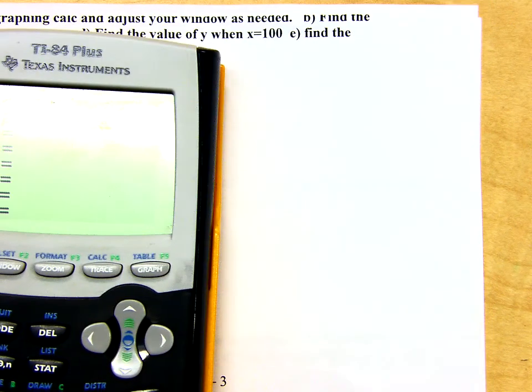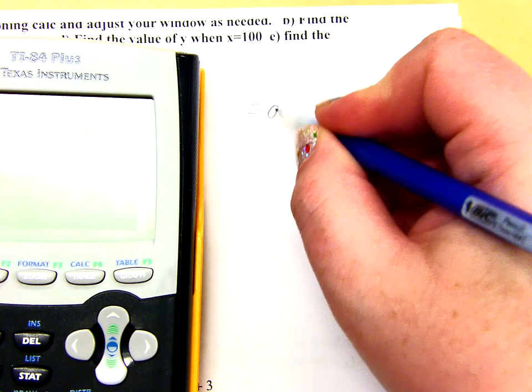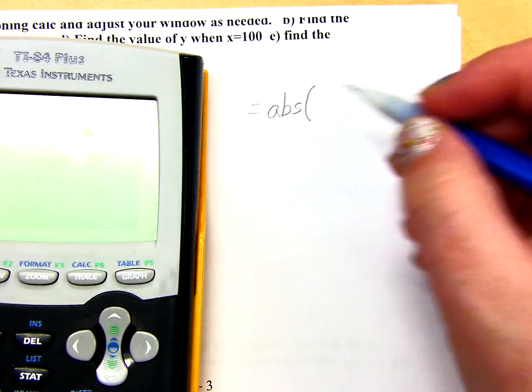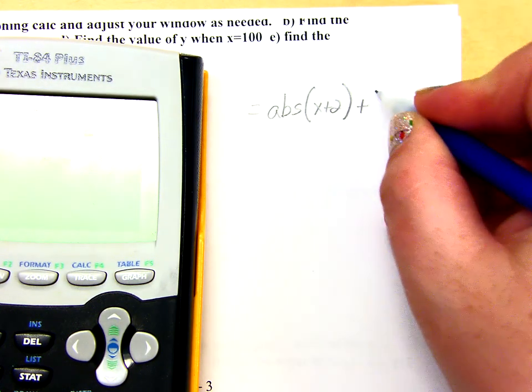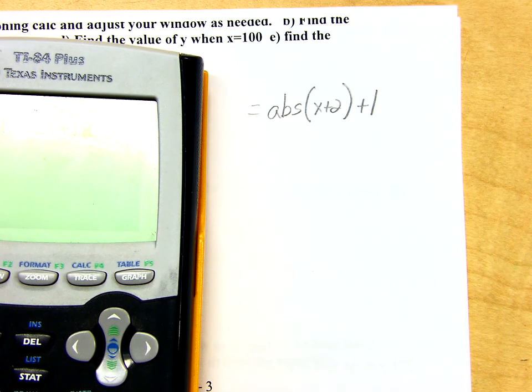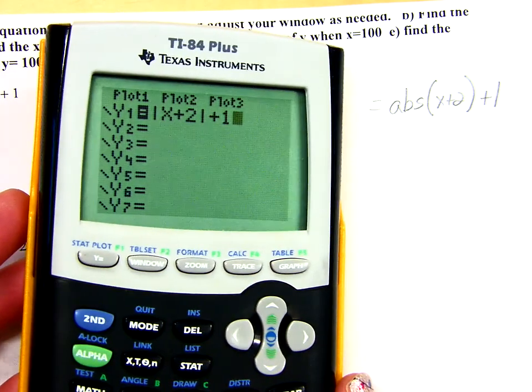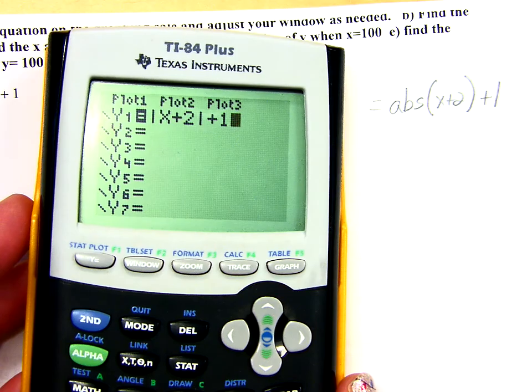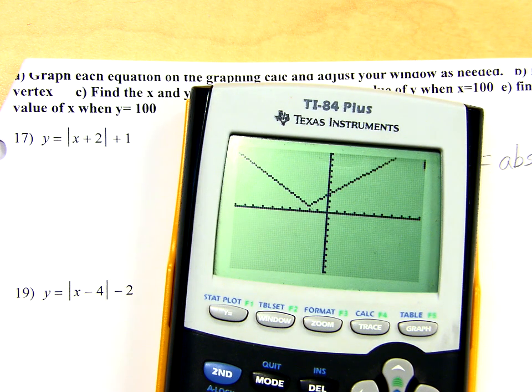So if you have a black calculator, I'm just going to write what it looks like here. After the equal sign, it'll say A, B, S, parentheses, and then you would have X plus 2. Close your parentheses and then do plus 1. So that's the same thing as what this is on the yellow calculator. So now it's in. I can go ahead and hit graph, and let's see if we can see the whole thing. Oh, I can.